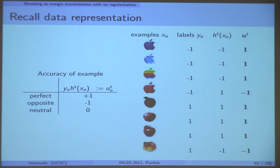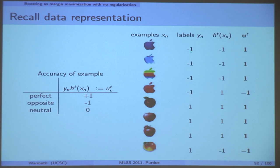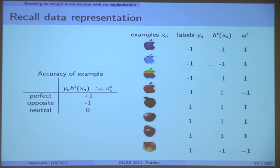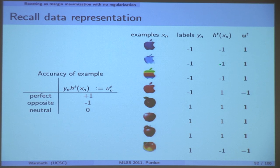We were in this following situation: we wanted to classify apples. Those were our examples. Per apple we had a label classification, and then we had a weak learner which had these classifications. We multiply the label times the instance and then you get the U vector — that's what's going to be in our matrices. By multiplying in the labels, you can assume all the labels are plus one.